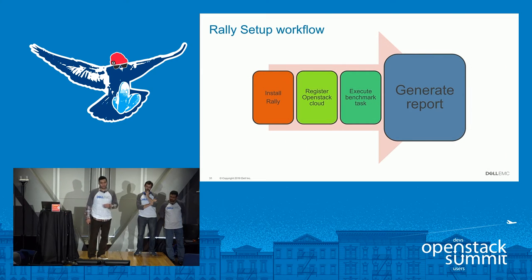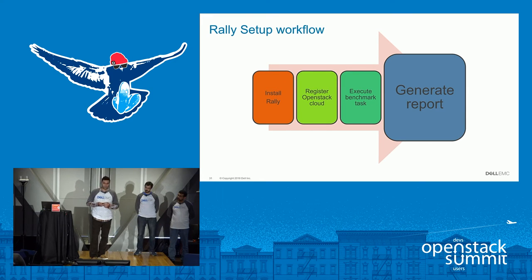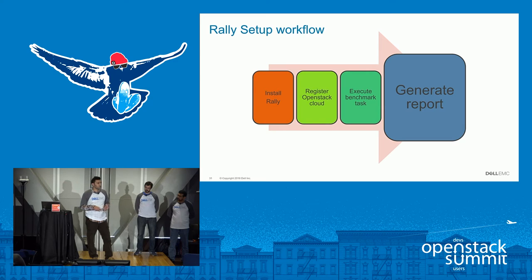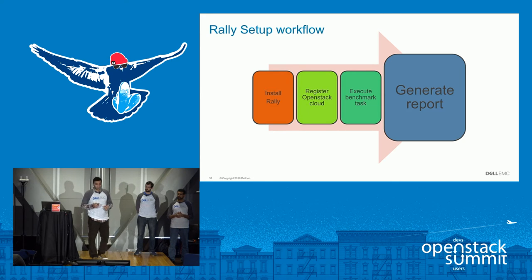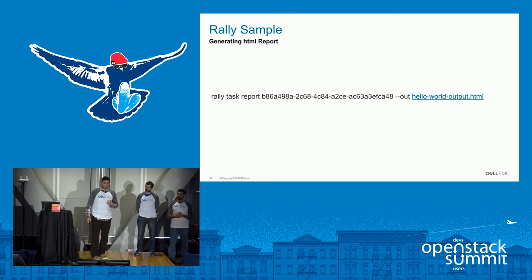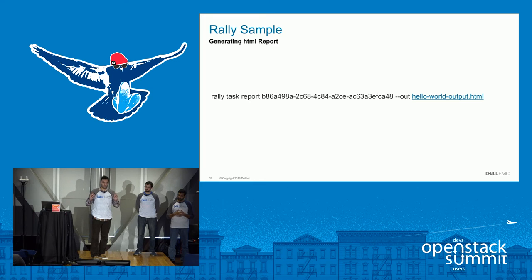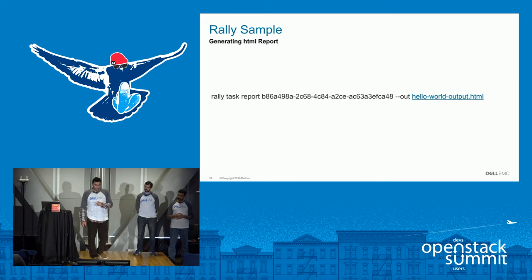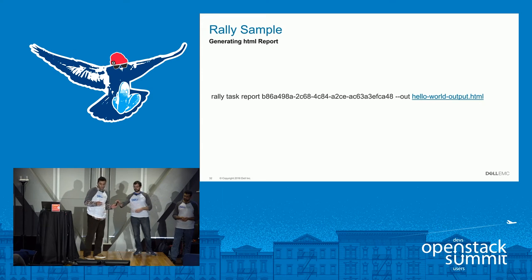When you finish the task, it gives you an option to generate the HTML report. With the HTML report you can see the same results that you saw on the CLI, and in addition you can also see graphs with more details — at each point in time, timestamps, and more. To generate the report you run 'rally task report' with the task ID, which is shown when the task finishes on the command line, and you specify where you want the output file.